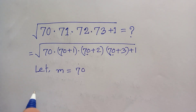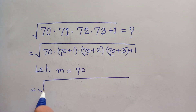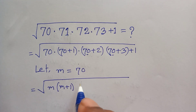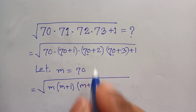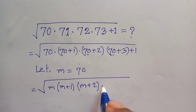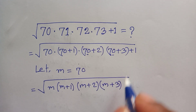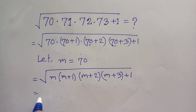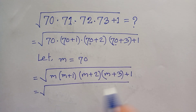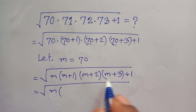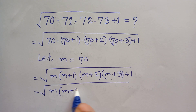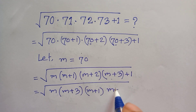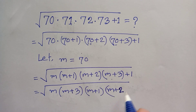So our equation becomes: under square root of m times (m+1) times (m+2) times (m+3), plus 1. Now we rearrange the pattern, grouping it as m(m+3) times (m+1)(m+2), plus 1.